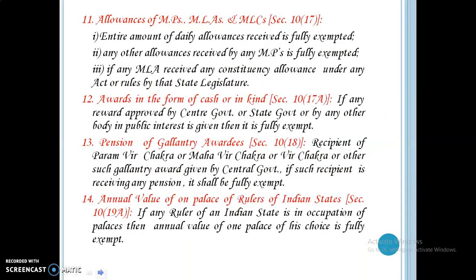Allowances of members of parliament, members of legislative assemblies, or members of legislative constituencies — the entire amount of daily allowances received is fully exempted. Any other allowances received by any MP are fully exempted. If any MLA receives any constituency allowance under any act or rules by that state legislature, it will be fully exempted. Awards in the form of cash or in kind — if any reward approved by central or state government or by any other body in public interest is given, it is fully exempted. Pension of gallantry awardees — recipients of Param Vir Chakra, Maha Vir Chakra, Vir Chakra, or other such gallantry awards given by the central government — if such a recipient is receiving any pension, it shall be fully exempted.